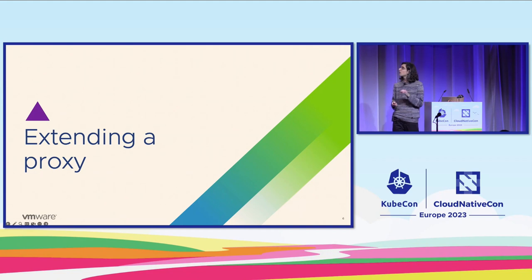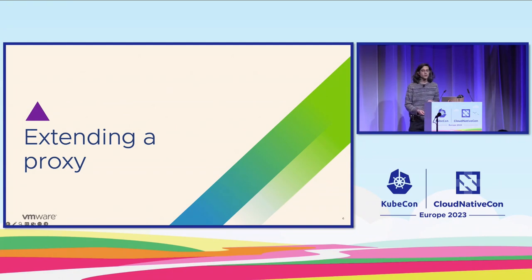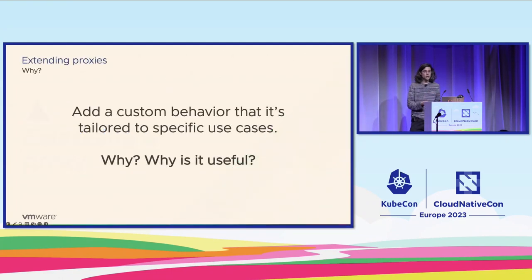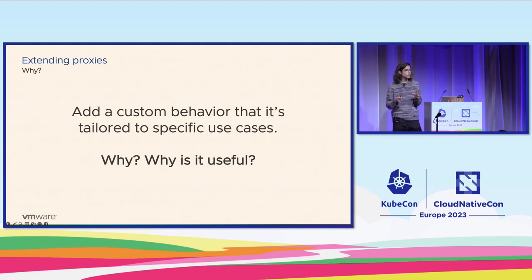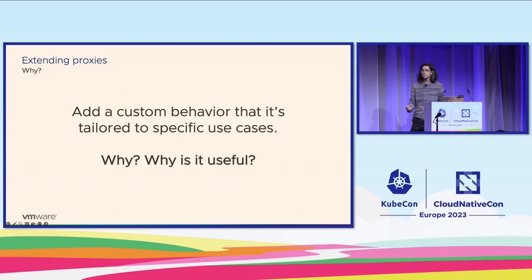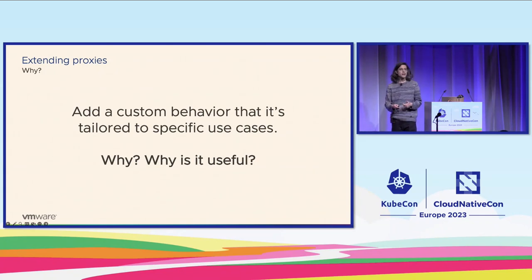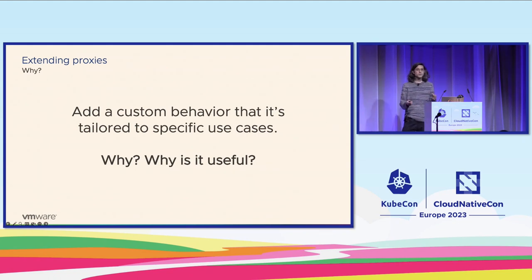Now let's talk about how we can extend all those small proxies — all those small dots that we have in our infrastructure. When talking about extending a proxy, we are talking about adding custom behaviors tailored to specific use cases. It could be something that everyone implements, like observability, traceability, and similar custom behaviors, or it could be something more specific to a particular infrastructure or company.